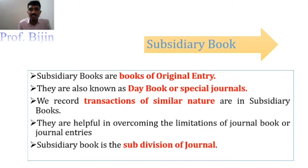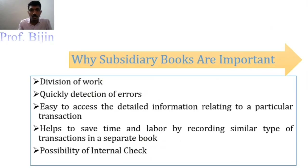So in subsidiary books, transactions are recorded by similar nature — all transactions of the same nature go into one subsidiary book. A company maintains multiple subsidiary books based on organizational convenience. Now we will see why subsidiary books are important and why companies maintain them instead of a general journal.